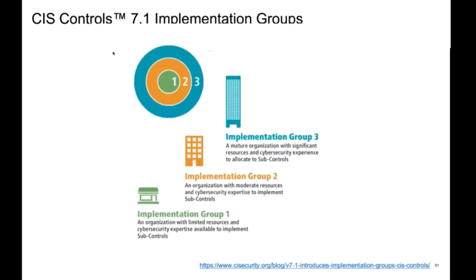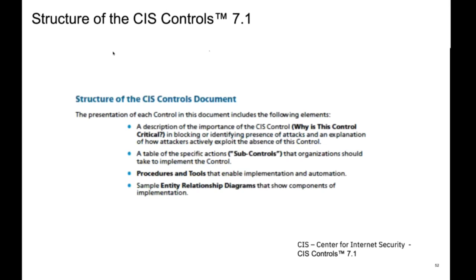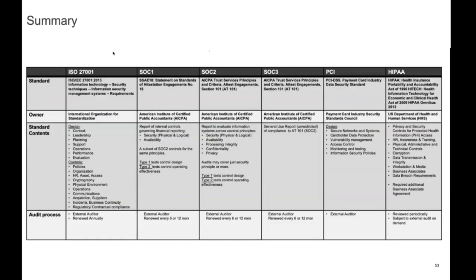CIS breaks their controls into three implementation groups based on the maturity and significance of the organizations using them — group three for mature enterprise organizations, group one for small single-storefront businesses. Each control is documented with why you're doing it, what the different parts are, what tools and procedures are involved, and an example of how to organize it. A summary of all the different controls covered in this module is provided as a reference to help keep them straight.